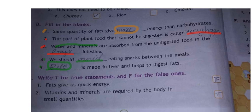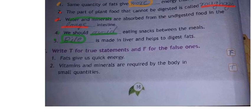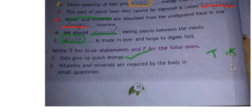Now true or false. First: fats give us quick energy — True. If we eat fats we get quick energy, so the answer is T. Second: vitamins and minerals are required in our body in small quantities — True. Eating a minimum amount of vitamins and minerals is enough; they help fight diseases.